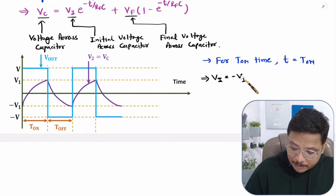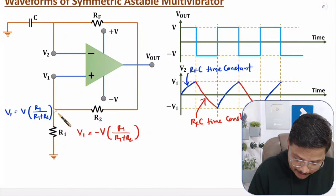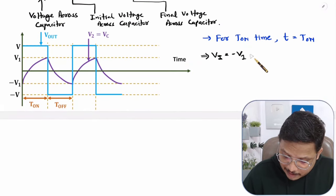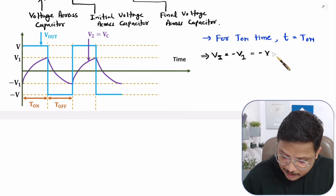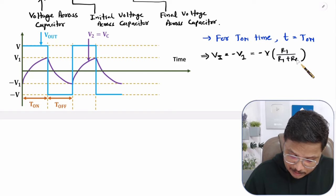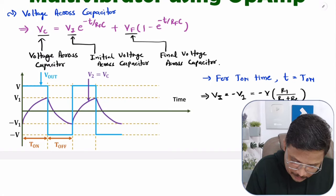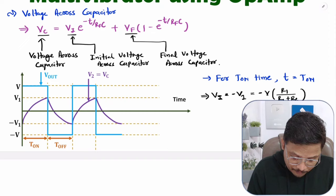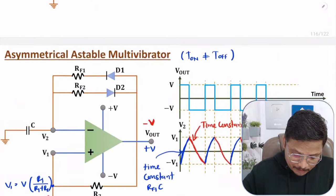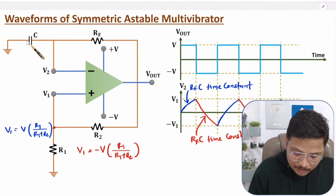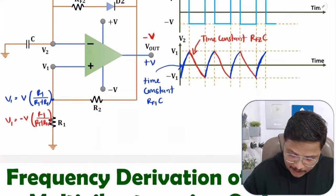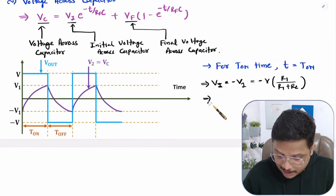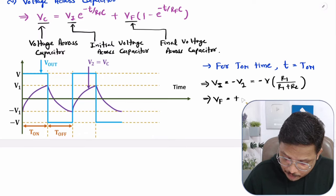V1 is the feedback voltage, which equals V into R1 divided by R1 plus R2. Now let us understand the final voltage Vf. Vf is the final voltage — that is, what voltage is applied to the capacitor to charge it. During T-on, we have plus V at the output side, so the capacitor is getting charged toward plus V. Therefore, during T-on, the final voltage Vf equals plus V.